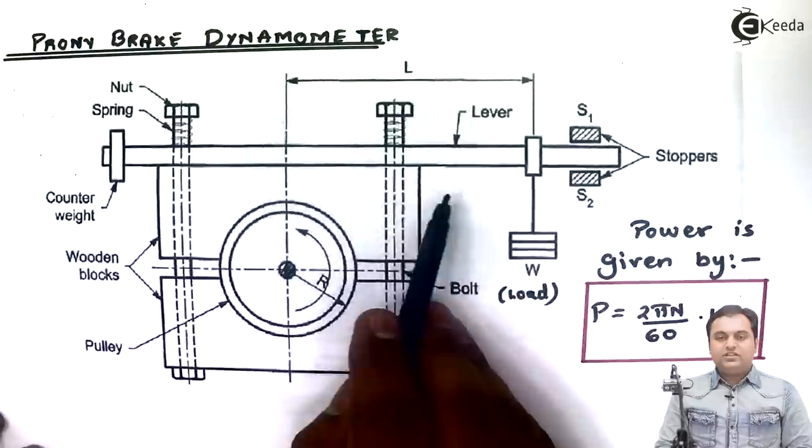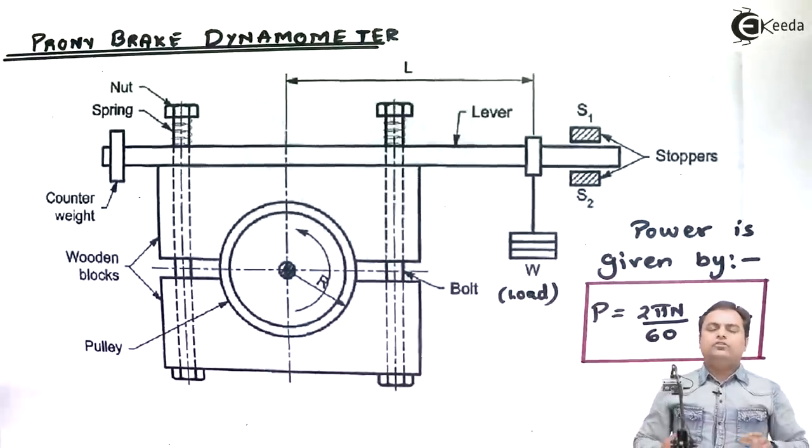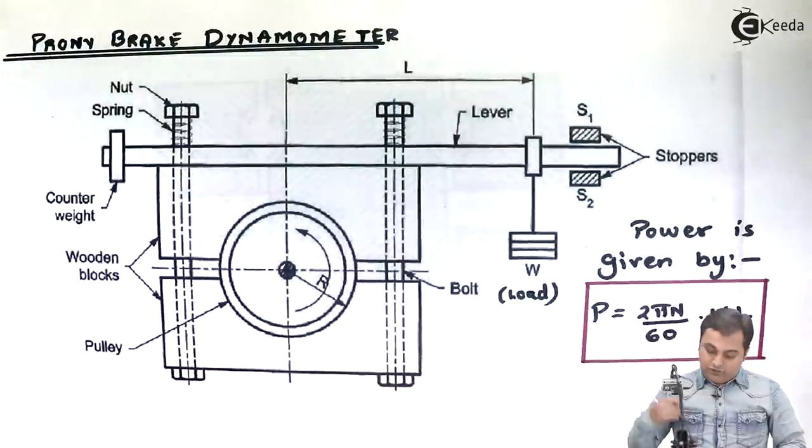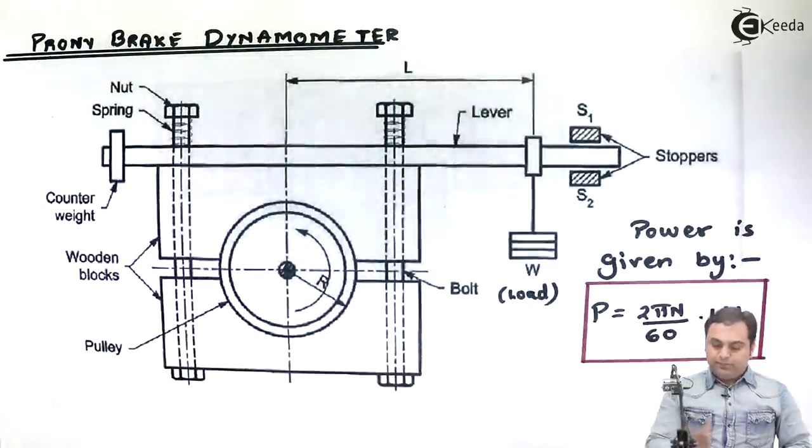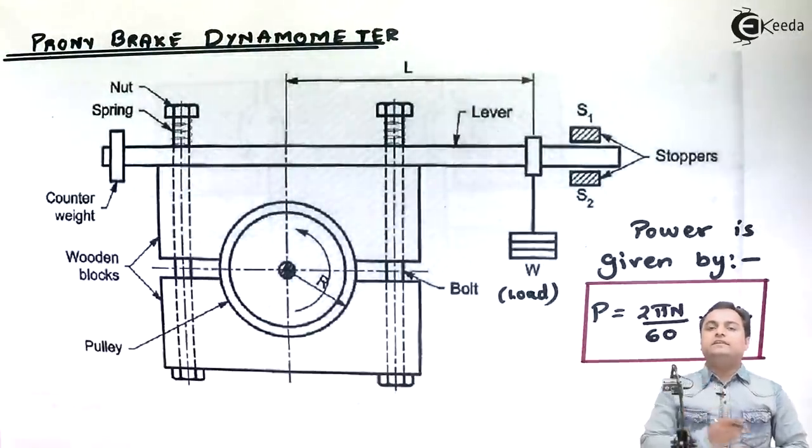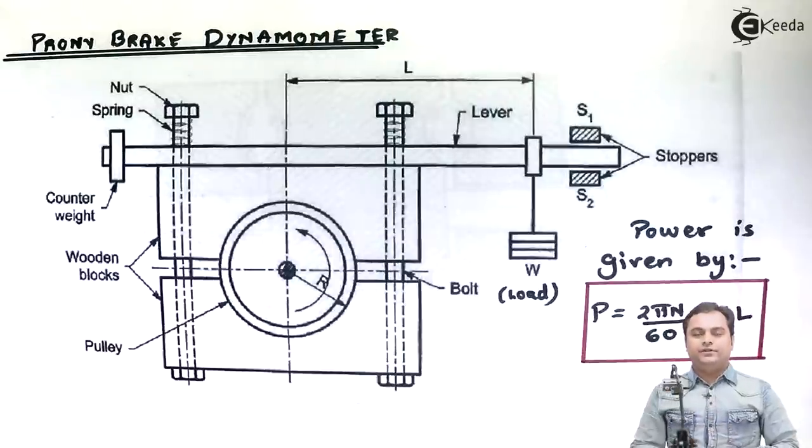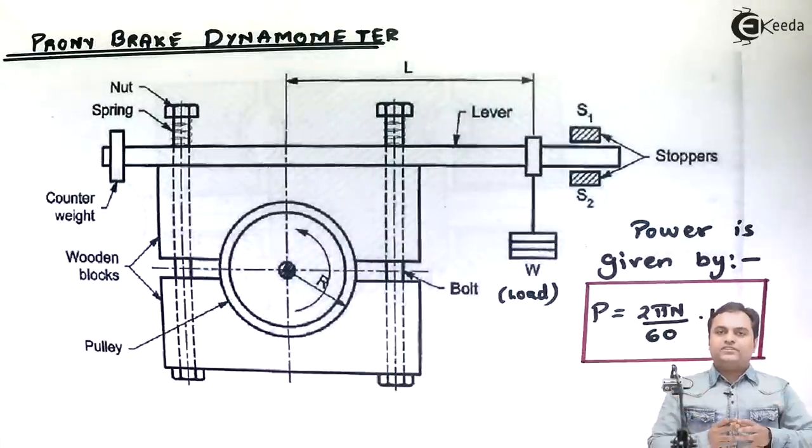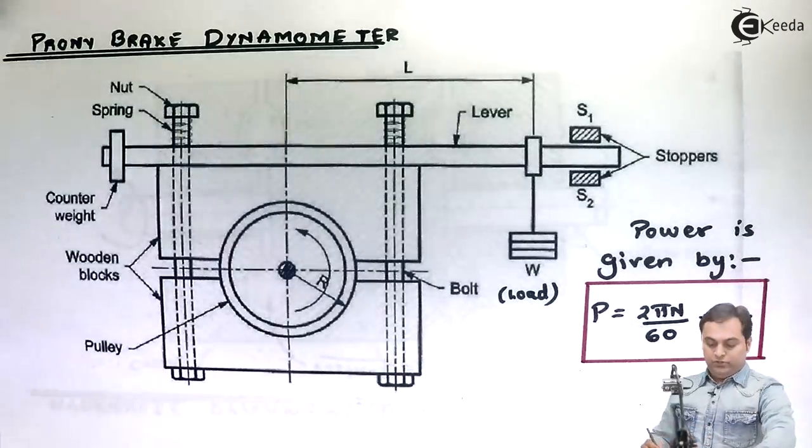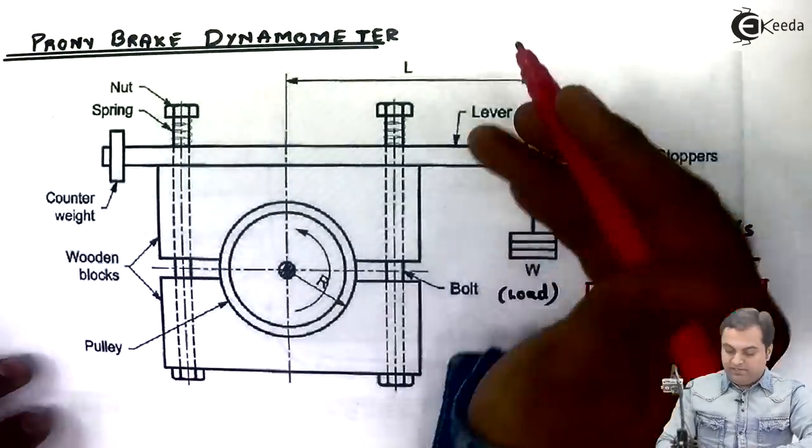So this was regarding the construction. Now how it functions - Prony brake dynamometer is a type of absorption dynamometer because it stops the shaft and then measures the power. So Prony brake dynamometers are of absorption type.